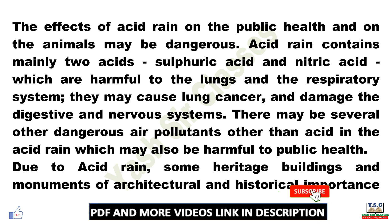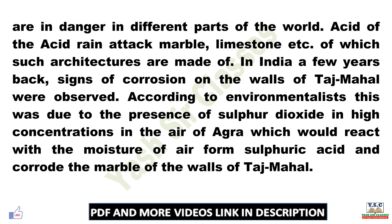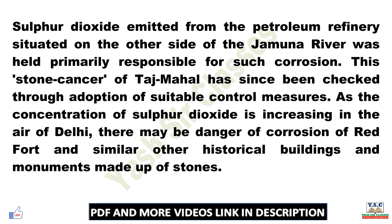Due to acid rain, some heritage buildings and monuments of architectural and historical importance are in danger in different parts of the world. The acid of acid rain attacks marble, limestone, etc. of which such architectures are made. In India, a few years back, signs of corrosion on the walls of Taj Mahal were observed. According to environmentalists, this was due to the presence of sulfur dioxide in high concentrations in the air of Agra, which reacted with the moisture of air to form sulfuric acid and corrode the marbles. Sulfur dioxide emitted from the petroleum refinery situated on the other side of the Jamuna River was held primarily responsible for such corrosion. This stone cancer of Taj Mahal has since been checked through adoption of suitable control measures.